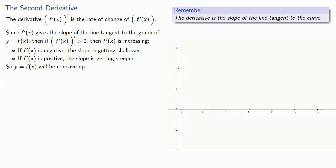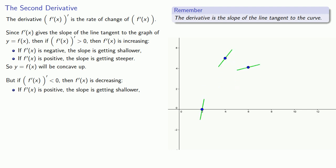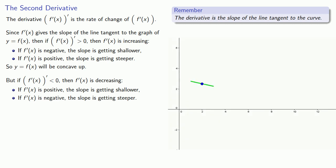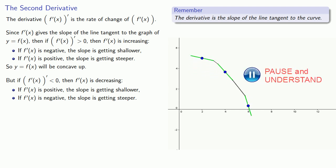On the other hand, suppose the second derivative is negative, so f prime of x is decreasing. If f prime of x is positive, the tangent line has a positive slope, but since it's decreasing the slope is getting shallower. If f prime is negative and decreasing, then the slope is getting steeper in the negative direction. In both cases the graph curls downward, and y equals f of x will be concave down.